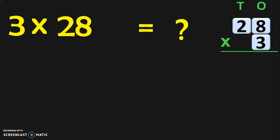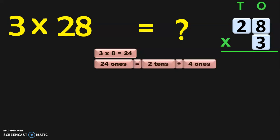Write down the numbers: 28 into 3 with place values 1s and 10s. Begin the multiplication from the 1s place. 3 into 8 is 24, which is 24 ones, regrouped as 2 tens plus 4 ones. Retain the 4 ones in the 1s place and take the 2 tens as a carry over to the 10s place.